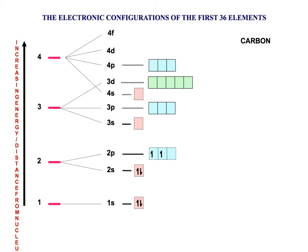Carbon has 6 electrons. You might think the electron would fit into the same orbital as the previous one, but because of electron-electron repulsion it actually goes into the next orbital. So we fill up all these orbitals with 1 electron first before we start backfilling.